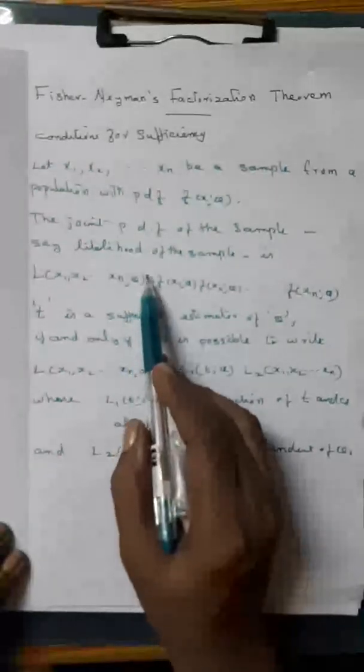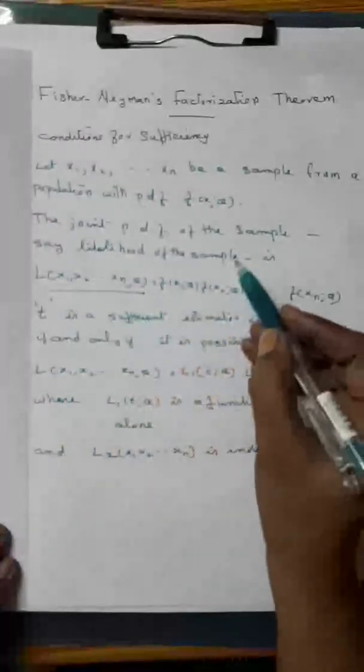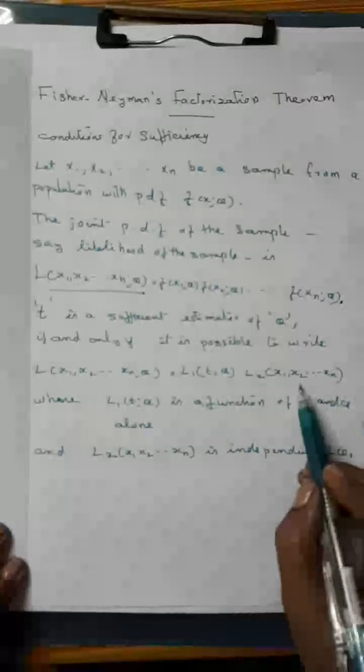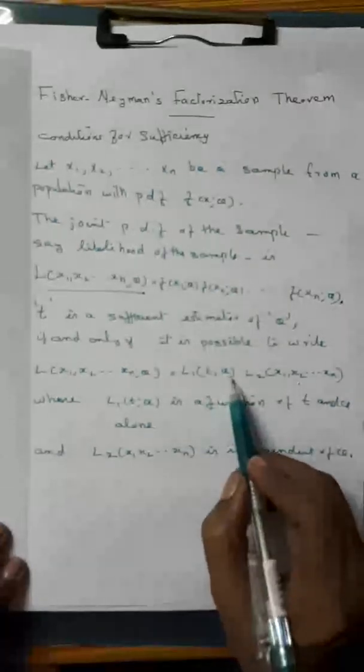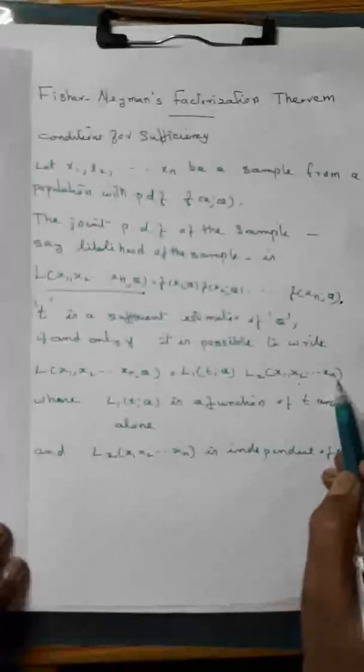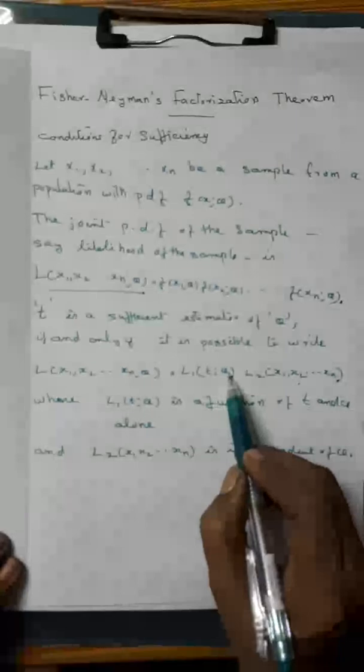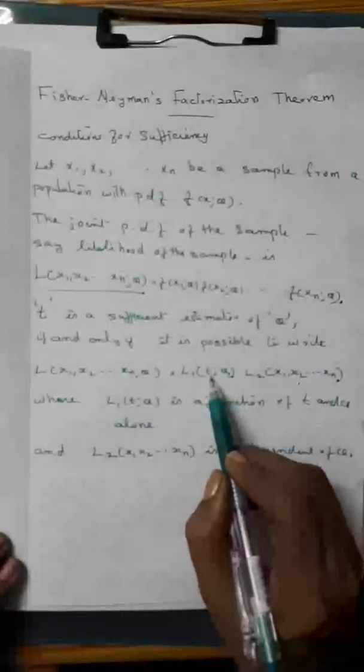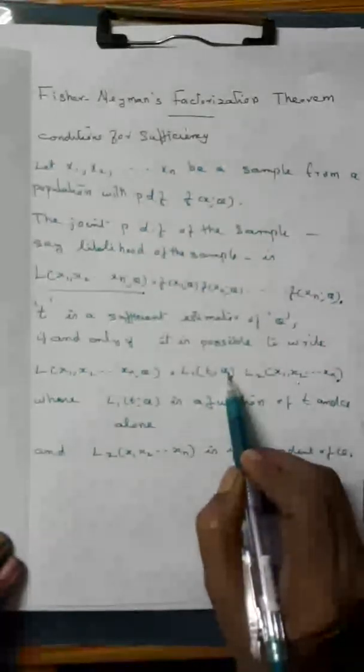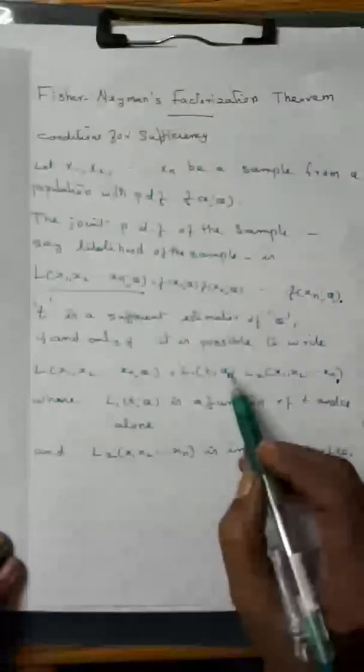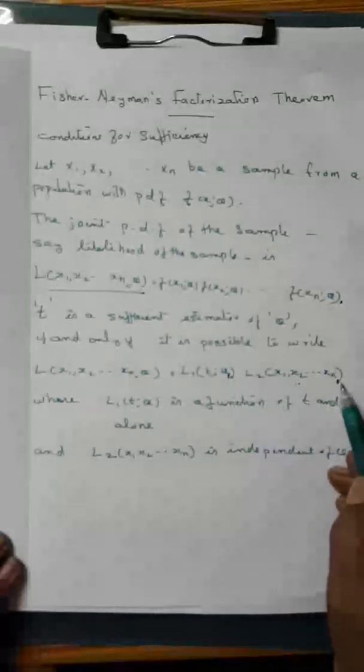And the next step is to rewrite this L(x1,x2,...,xn;θ), that is the likelihood of the sample or joint probability density function of the sample, where the first function L1(t;θ) is a function of t and θ alone, that is a function of the estimator and parameter, and the second function L2(x1,x2,...,xn) is independent of θ or is a function of random samples.